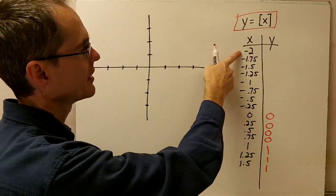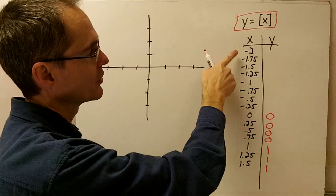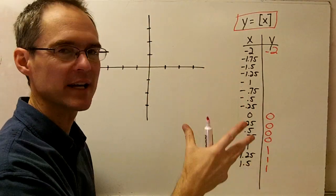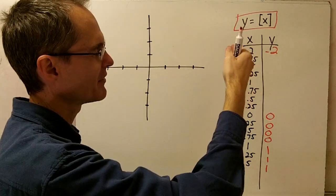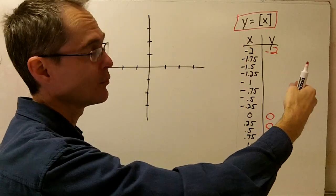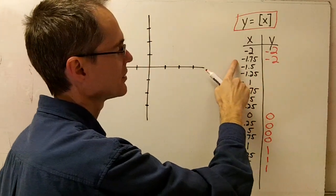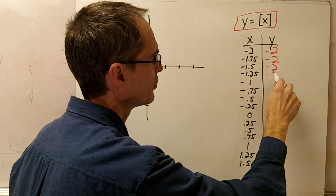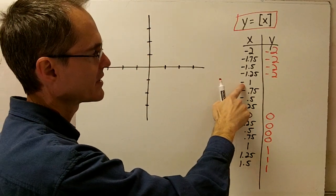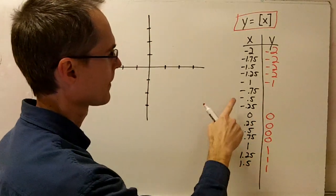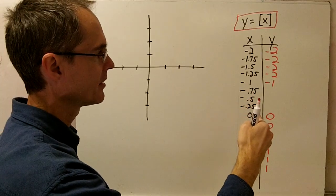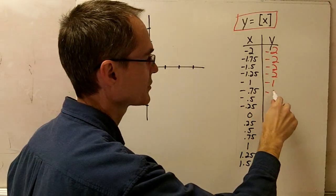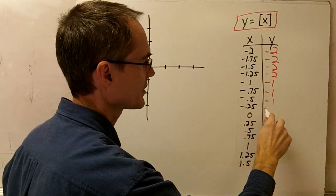Now let's go back to the negative numbers. For x equals negative 2, negative 2 is an integer, so the greatest integer that doesn't go over negative 2 is just negative 2. For negative 1.75, negative 1 is actually larger than negative 1.75, so negative 2 is the integer closest to this one without going over. The same thing applies for negative 1.5 and negative 1.25. At negative 1, the greatest integer without going over is just negative 1. For negative 0.75, 0 is greater than negative 0.75, so it's also negative 1 — and the same for negative 0.5 and negative 0.25.